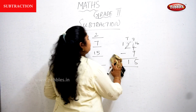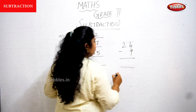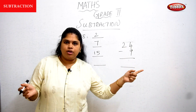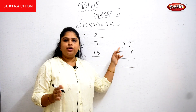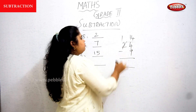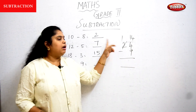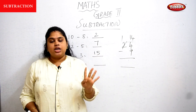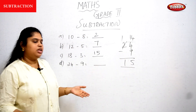Let's do 24 minus 9 one more time. We cannot perform backward counting from 4 to 9. So we borrow 1 from the tens digit: 4 becomes 14, and the 2 becomes 1. Now from 14 to 9: 13, 12, 11, 10, 9. Up to 9 is 5 steps. So write 5 and bring down the 1, giving 15 as the answer.